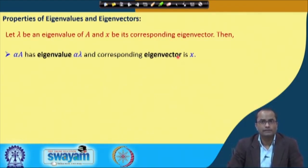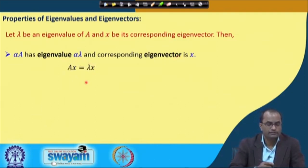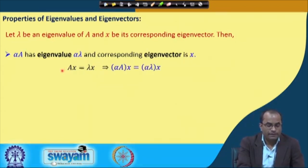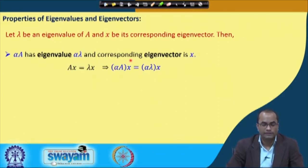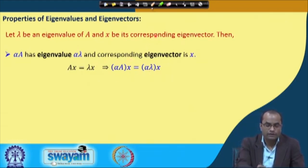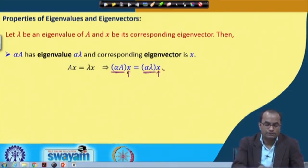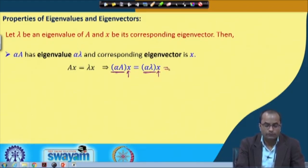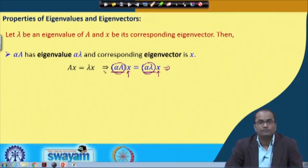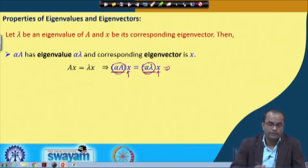This property we can easily verify. We have A x equal to lambda x. If we multiply both sides by alpha, we get alpha A x equal to alpha lambda x. Treating alpha A as a matrix, alpha is multiplied to each entry of A, and we conclude that alpha lambda is the eigenvalue of matrix alpha A with eigenvector x.